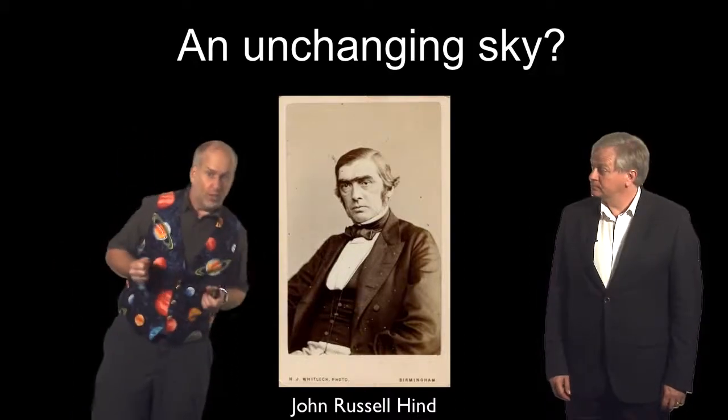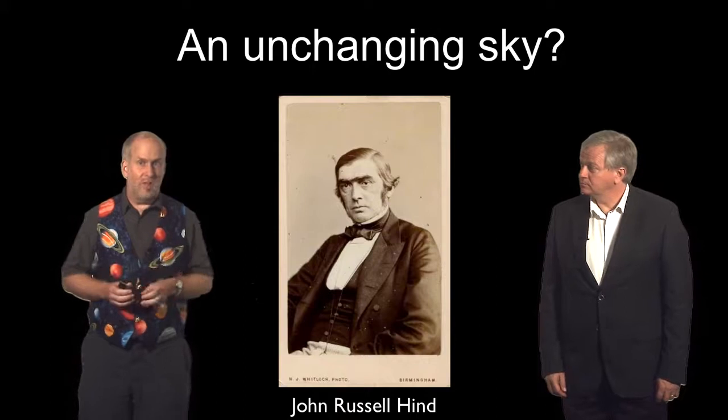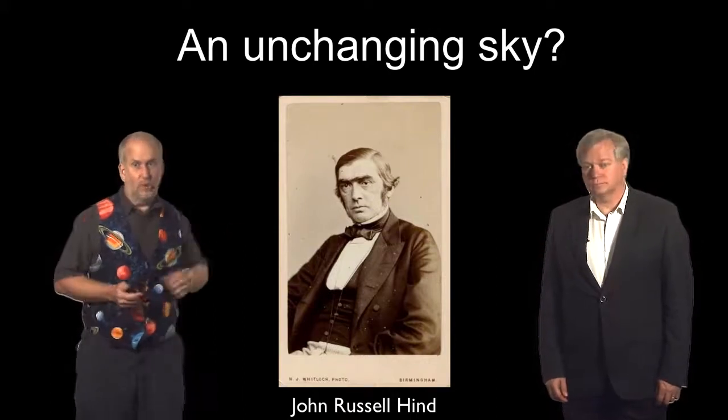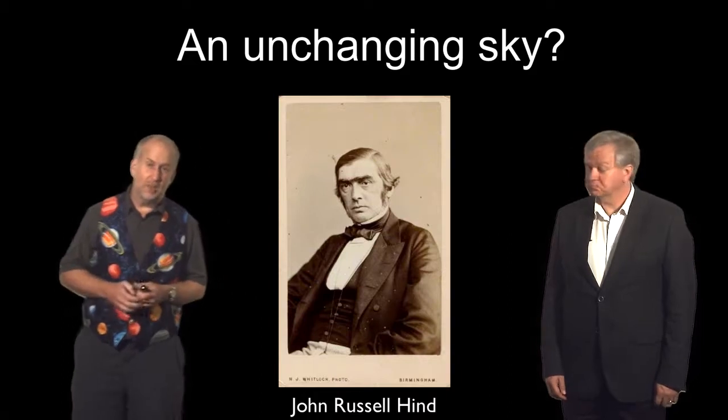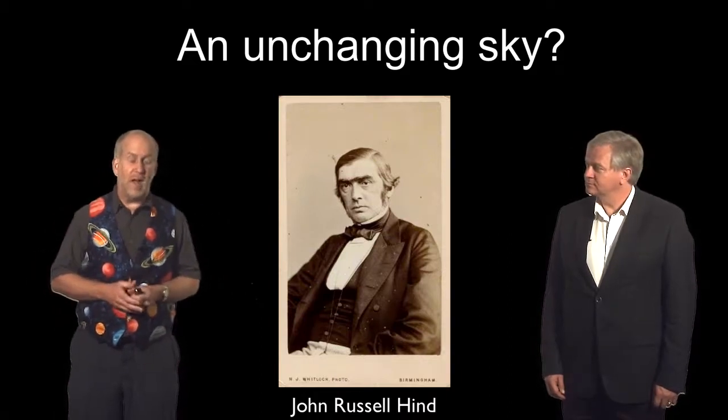The first clue that white dwarf stars could actually be violent came in the 19th century from this guy, John Russell Hind, who was the son of a lace maker from the Midlands of England and working on the Naval Almanac.